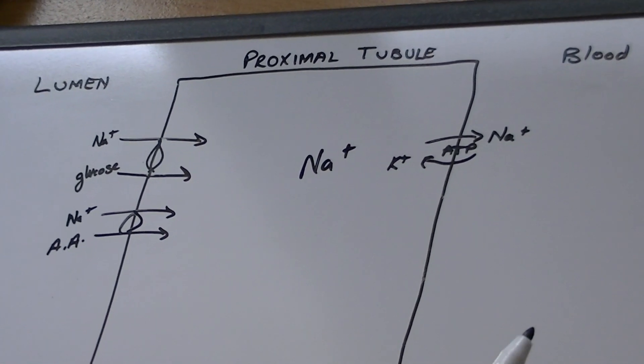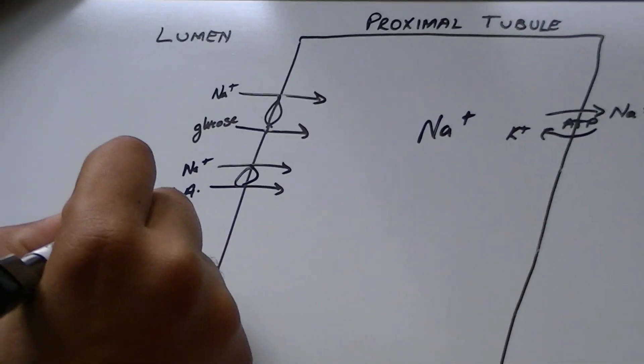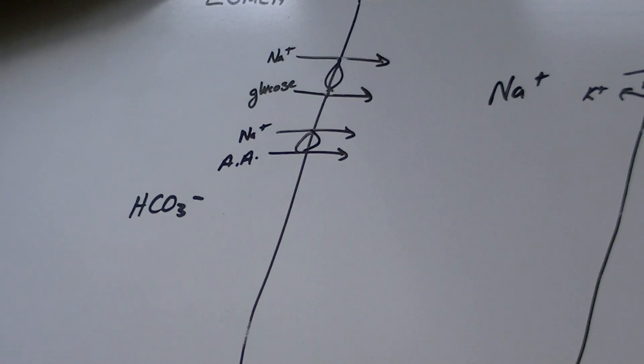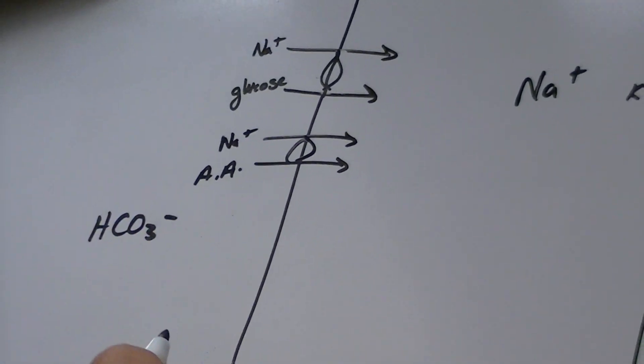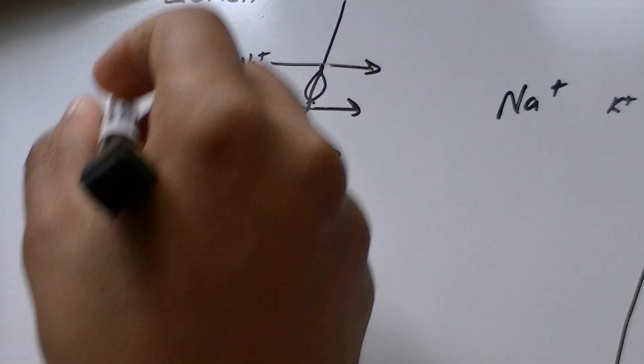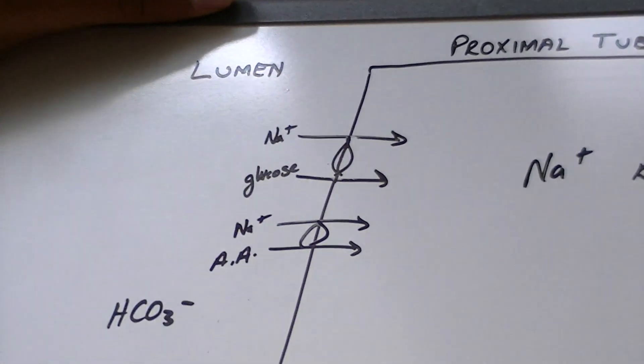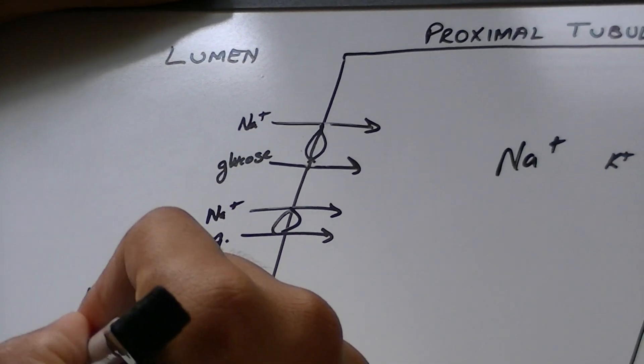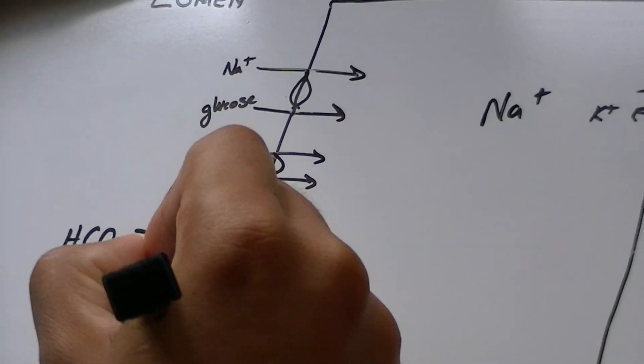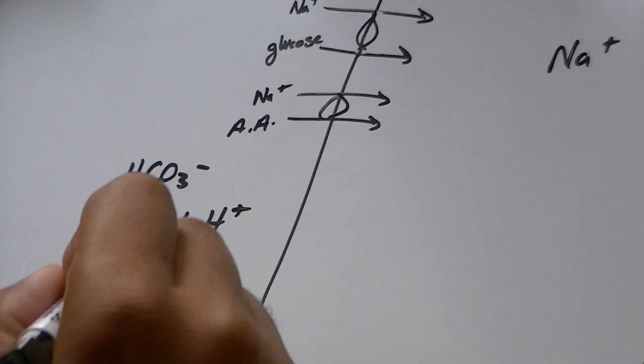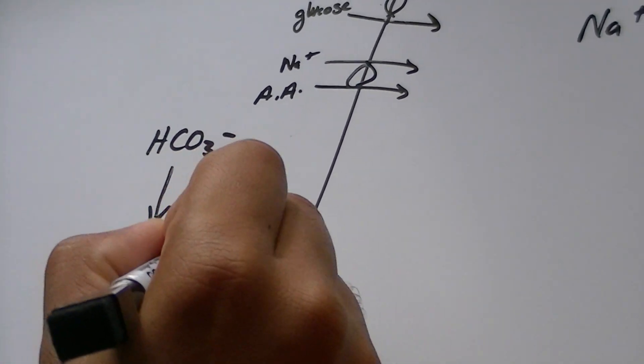What else happens is, only in the proximal tubule is bicarbonate reabsorbed. This has a unique process, which you must understand. Bicarbonate comes in, in the lumen, this is all the filtrate that comes into the kidney, and bicarbonate attaches itself with hydrogen, making itself H2CO3.